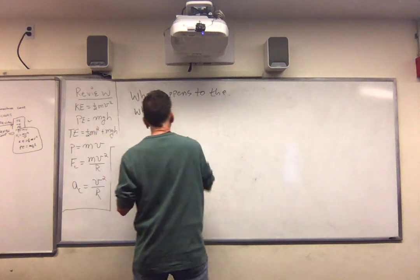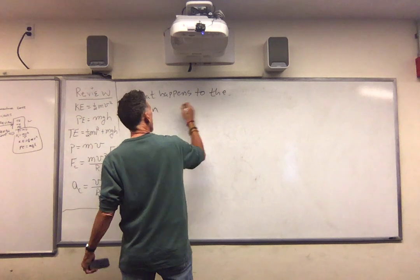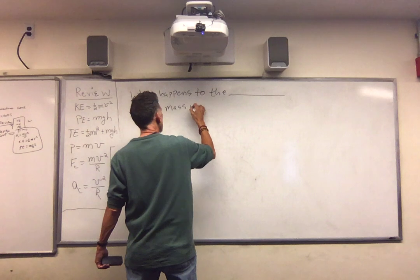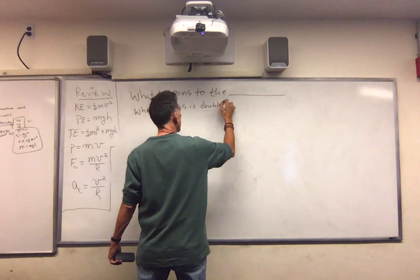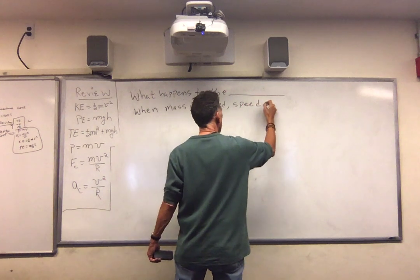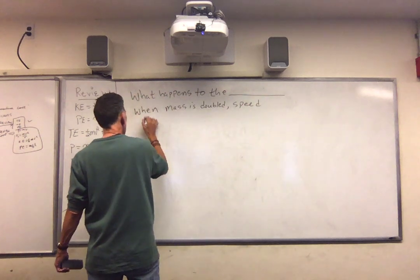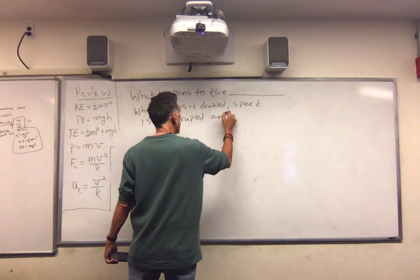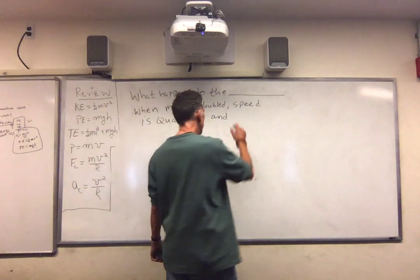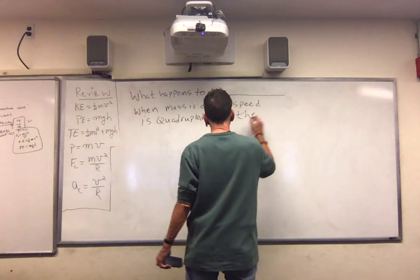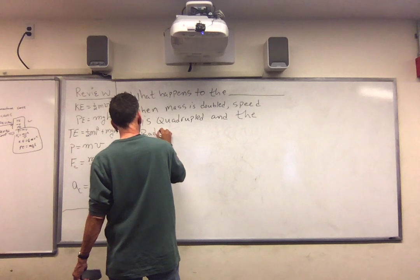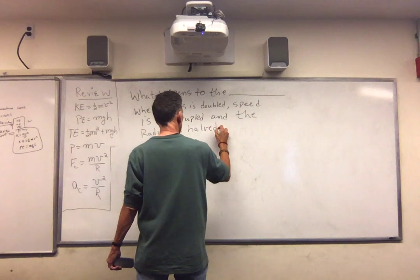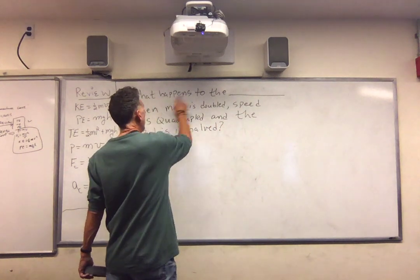What happens to the... We'll fill this in. Here I'll say when mass is doubled, speed or velocity is quadrupled and the radius is halved. So what happens? Well, let's start with kinetic energy.